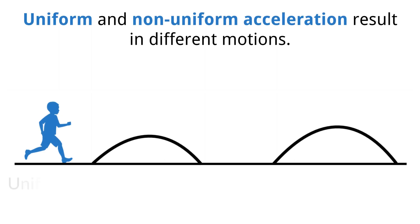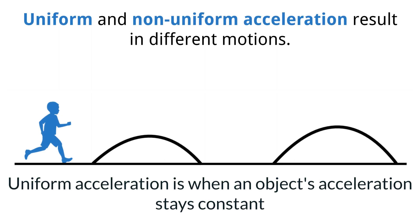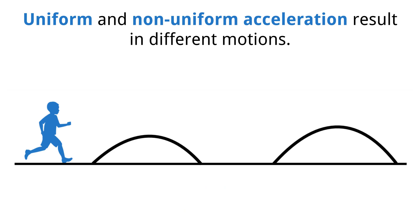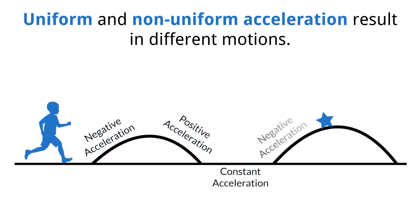So far we have talked about object motion under uniform acceleration, when an object's acceleration stays constant. However, our world does not consist of only uniform motion, and therefore we must consider objects that move under non-uniform motion as well. Examples include a runner moving over a hilly section of a run, where the runner's acceleration changes as they move up and down hills, objects moving in circles, and objects subject to air resistance. Therefore, for your problem solving, it is essential that you pay close attention to whether the object is undergoing uniform motion and whether we are ignoring air resistance, as the SUVAT equations will only work for situations of uniform acceleration.